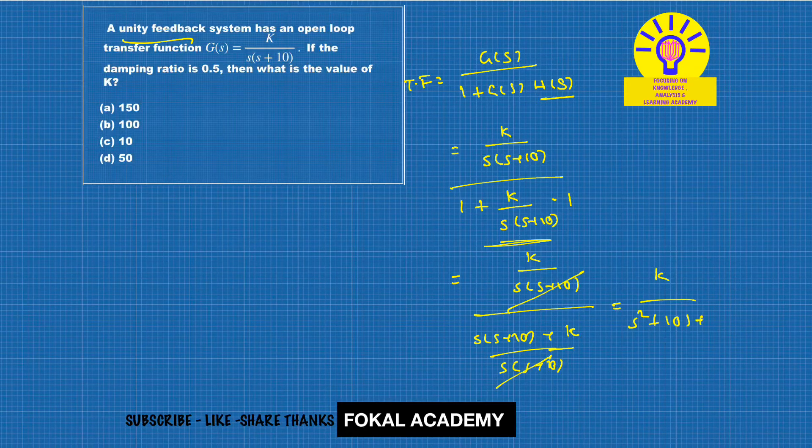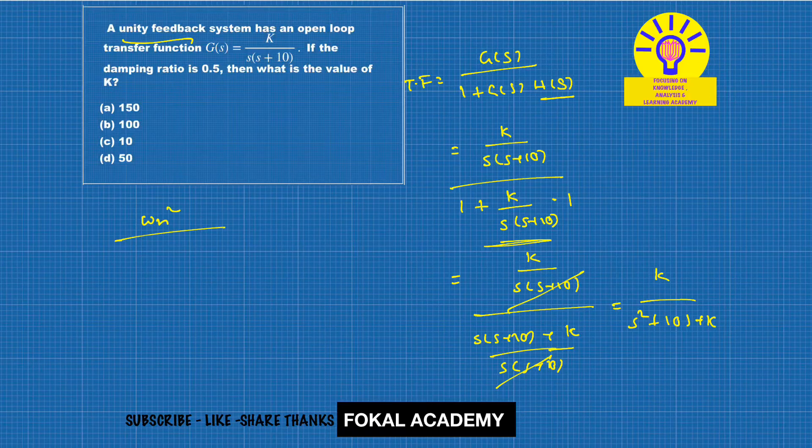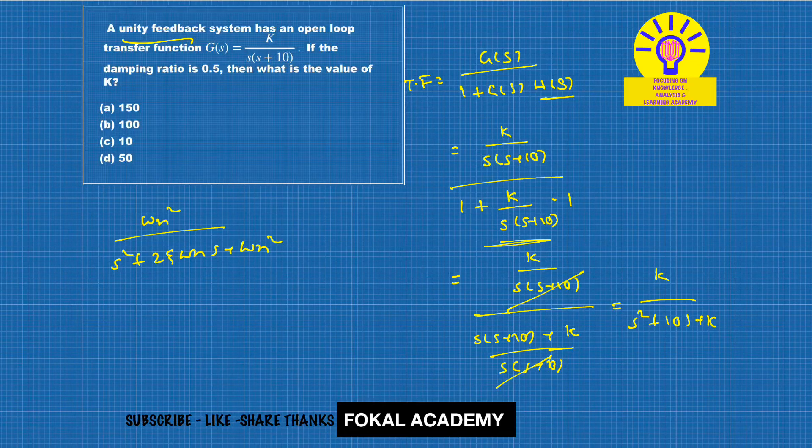Now compare with the standard transfer function, that is ωn²/(s²+2ζωns+ωn²). This is the standard transfer function. By comparing with this, 2ζωn is equal to 10 and ωn² is equal to k.